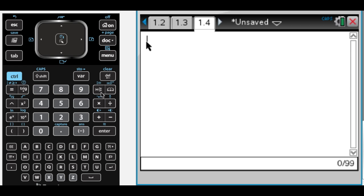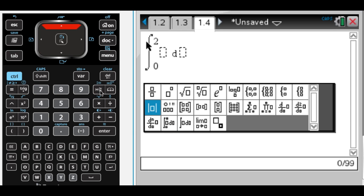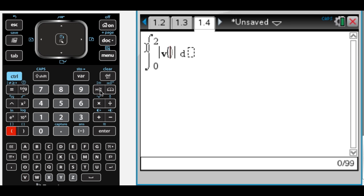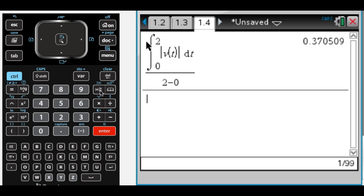So that is a definite integral from 0 to 2 of the absolute value, which has a template here, of v of t, divided by 2 minus 0. So that's how you find the average value of the speed function, which is the average speed of the particle. And I get 0.0371. And that's how I would answer this question. So I hope you have found this helpful. Good luck.